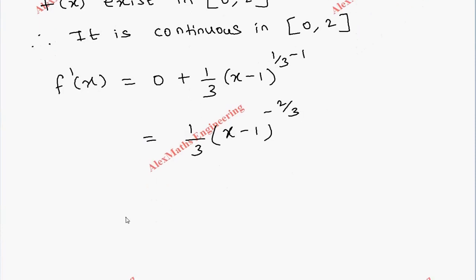And we can carry this term to the denominator. So, f'(x) = 1 / [3(x-1)^(2/3)].